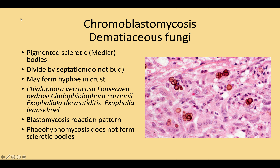The fungi divide by septation and they don't form a bud, and that's how you can distinguish them from pheohyphomycosis. You may rarely see hyphal forms in chromoblastomycosis, but this tends to be in the crust rather than in the dermis. There are multiple species involved, as listed on the left-hand side.